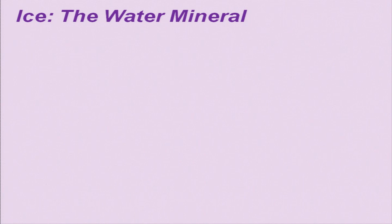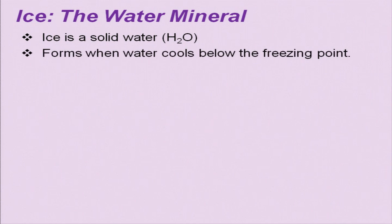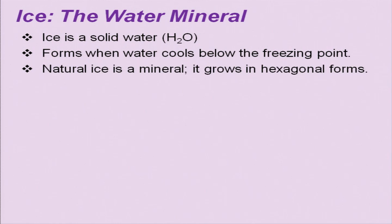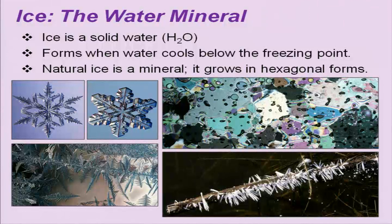Ice is basically the water mineral. Any substance which holds a crystal form we categorize as a mineral. Ice is solid water — H₂O — that forms when water cools below the freezing point. Natural ice is a mineral; it grows in hexagonal form. This shape is shown in thin section with the crystal formation demonstrated, hence solid water can be termed a mineral.